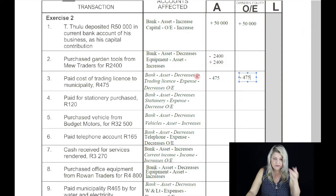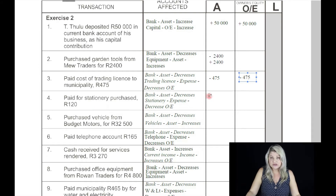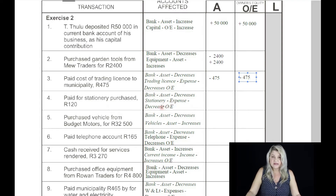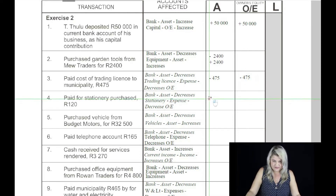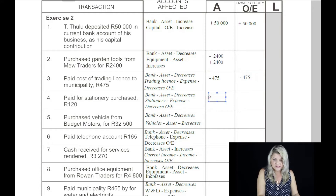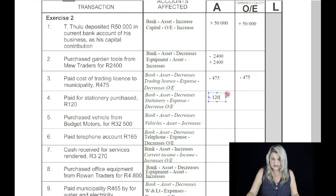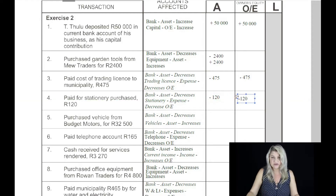Transaction number four: paid for stationery purchased, 120 Rand. We assume that it's bank. So bank is an asset — it decreases because we paid for something. Stationery is an expense. An expense always decreases owner's equity. So the bank, as an asset, decreases by 120 Rand, and owner's equity also decreases by 120 Rand.